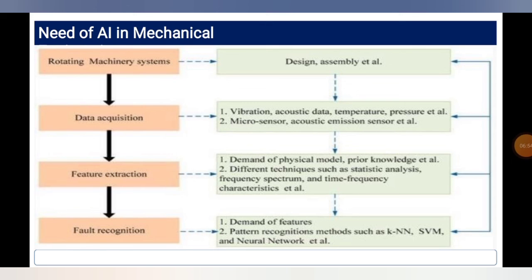The need for AI in mechanical engineering in rotating machinery systems involves three stages: data acquisition, feature extraction, and fault recognition. The rotating machinery system also connects with design, assembly, etc. Data acquisition deals with vibration, acoustic data, temperature, pressure, micro-sensors, and acoustic emissions. Feature extraction demands physical models and prior knowledge of AI. Fault recognition demands feature pattern recognition using KNN, SVM, and neural networks.